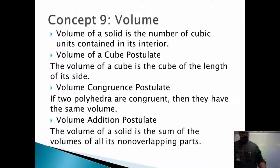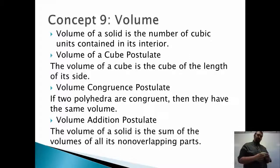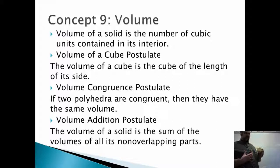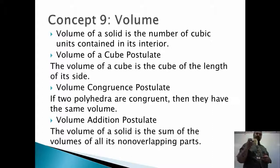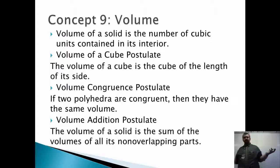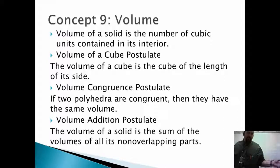What we found is, first of all, the volume of a cube is the cube of the length of its side — that's side times side times side. So whatever the side length is, I cube it, multiply it by itself three times, and I'll get the volume of the cube. Another thing: if I know two polyhedra are the same size or congruent, they have to have the same volume.